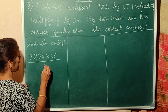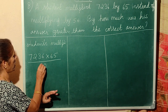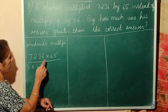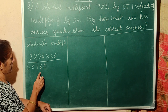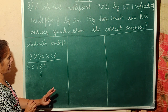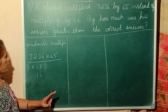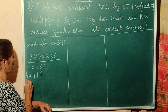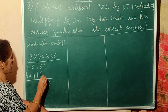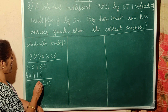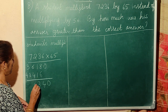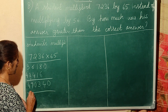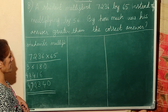So, 7236 into 65: 5 sixes are 30, 5 threes are 15 plus 3 = 18, 5 twos are 10 plus 1 = 11, 5 sevens are 35 = 36. Then 6 sixes are 36 (leave one blank), 6 threes are 18 plus 3 = 21, 6 twos are 12 plus 2 = 14, 6 sevens are 42 plus 1 = 43. Adding up: 0, 8+6=14, 1+1=2, 2+1=3, 4+6=10, 1+3=4, 4+3=7. Answer: 470,340.